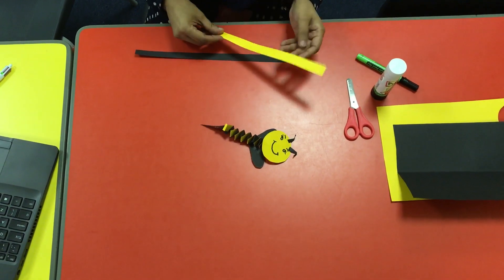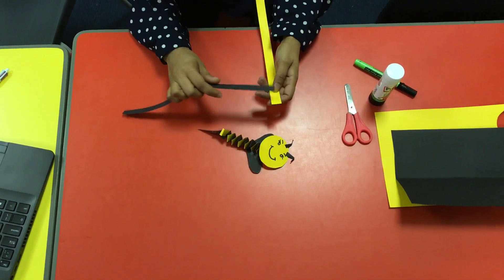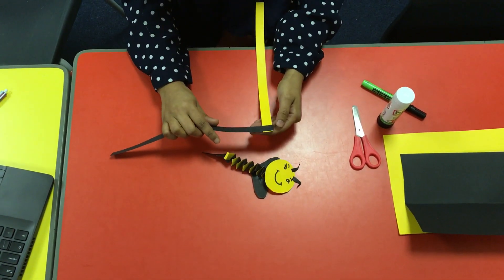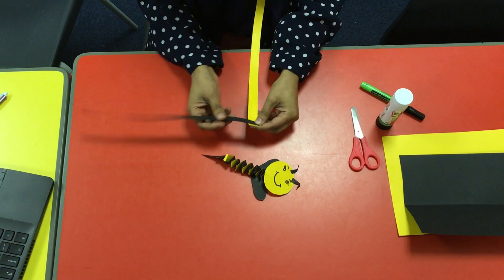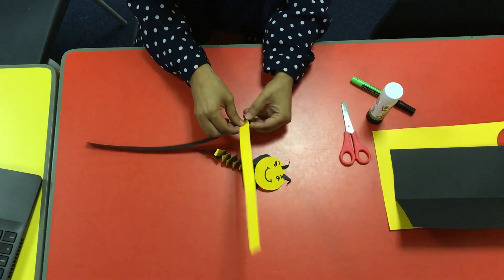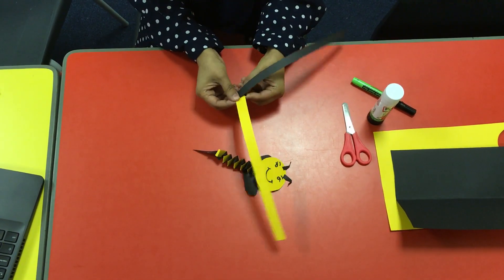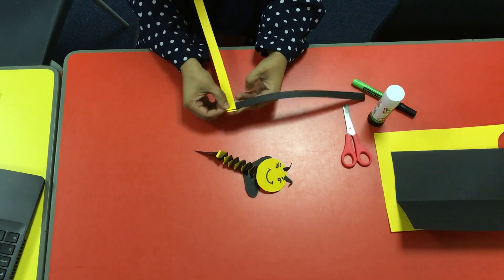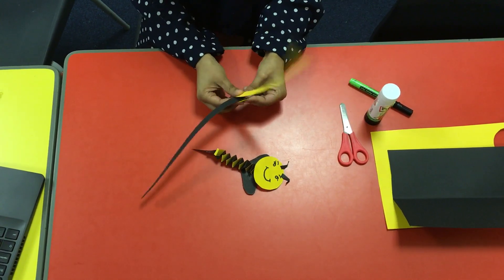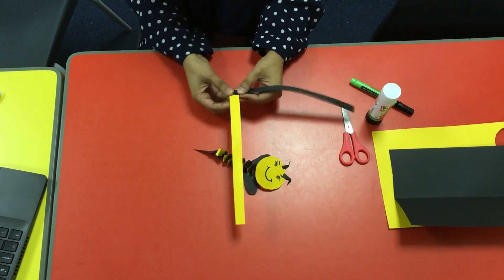The first thing we need to do is get two strips of colored card, or paper will do. What you're going to do is put them like this, one on top of another, and keep going with that pattern. This will create that spring effect for your bee.